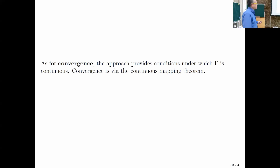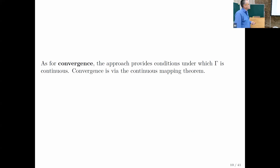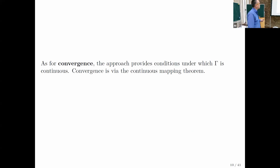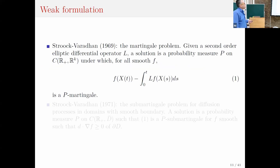There is also recent work by Bass and colleagues on questions of pathwise uniqueness and non-uniqueness for RBM in the orthant. As for convergence, most of these papers have also provided conditions under which the map is continuous. So once you have continuity, you have convergence via the continuous mapping theorem.